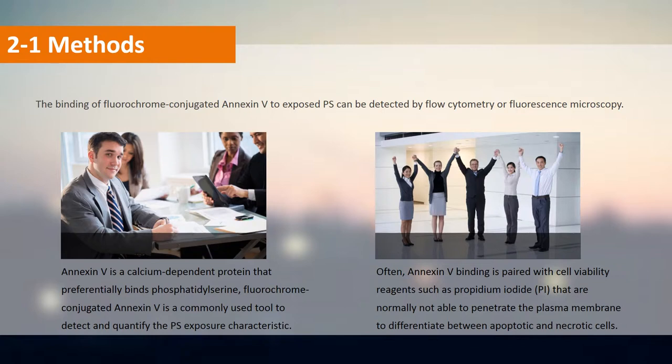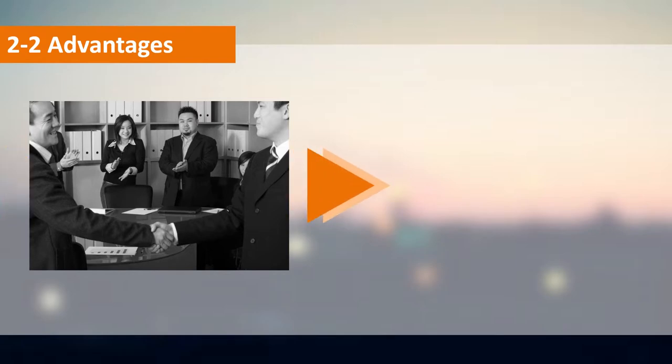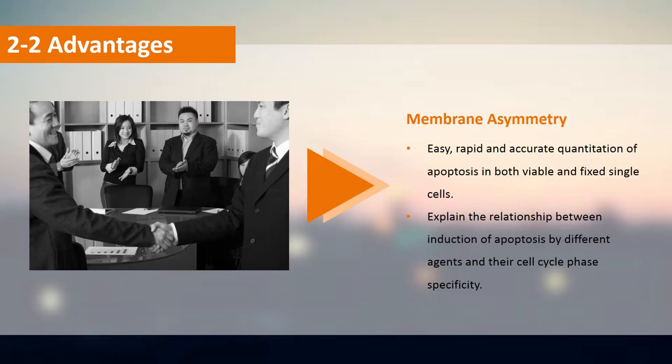Annexin V binding is often paired with cell viability reagents such as propidium iodide (PI), which are normally not able to penetrate the plasma membrane, to differentiate between apoptotic and necrotic cells. The binding of fluorochrome-conjugated Annexin V to exposed PS can be detected by flow cytometry or fluorescence microscopy, providing easy, rapid, and accurate quantitation of apoptosis in both viable and fixed single cells.